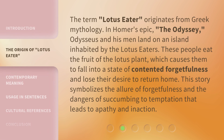The term lotus eater originates from Greek mythology. In Homer's epic The Odyssey, Odysseus and his men land on an island inhabited by the lotus eaters. These people eat the fruit of the lotus plant, which causes them to fall into a state of contented forgetfulness and lose their desire to return home. This story symbolizes the allure of forgetfulness and the dangers of succumbing to temptation that leads to apathy and inaction.